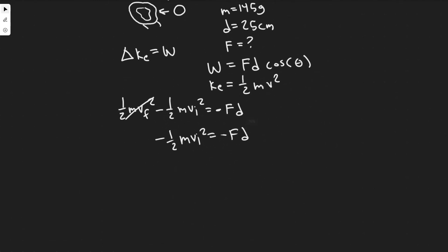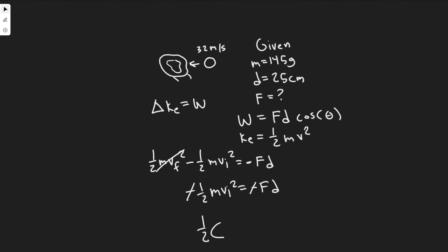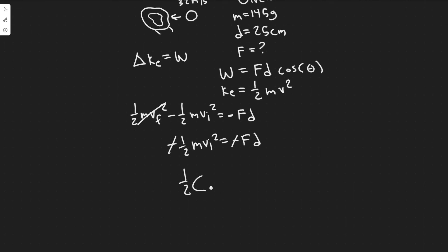So if we want to just solve for the force now, because that's what they want us to find, we just got to start plugging the values and solve. So these minus signs are going to cancel. One half times the mass. So we have 145 grams here, which is 0.145 kg. So make sure you use the correct units times its initial velocity, which was 32 squared equals the force times the distance. So this has to be in meters since we're using meters per second here. So 25 centimeters is 0.25 meters.